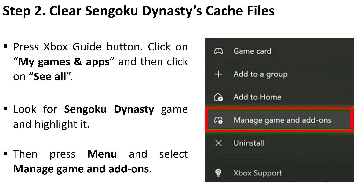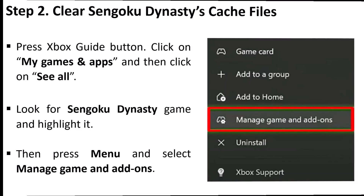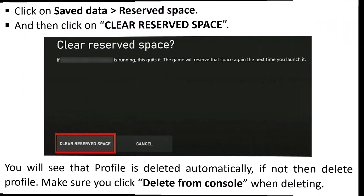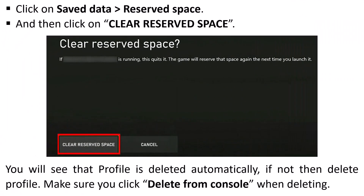Step two is to clear Sengoku Dynasty cache files. Press the Xbox guide button, click on My Games and Apps, then click on See All. Look for the Sengoku Dynasty game, highlight it, press Menu, select Manage Game and Add-ons, click on Save Data Reserve Space, and then click on Clear Reserve Space. You will see that the profile is deleted automatically; if not, then delete the profile.